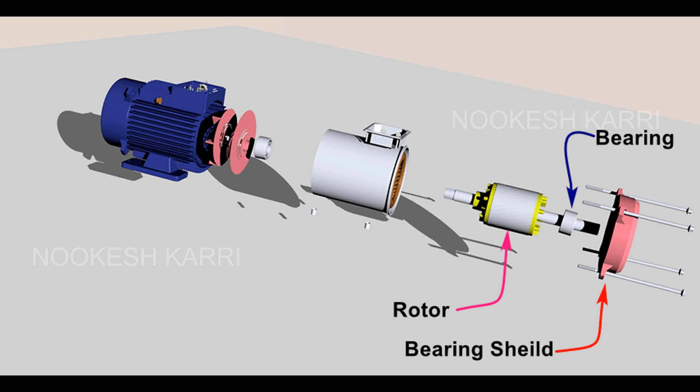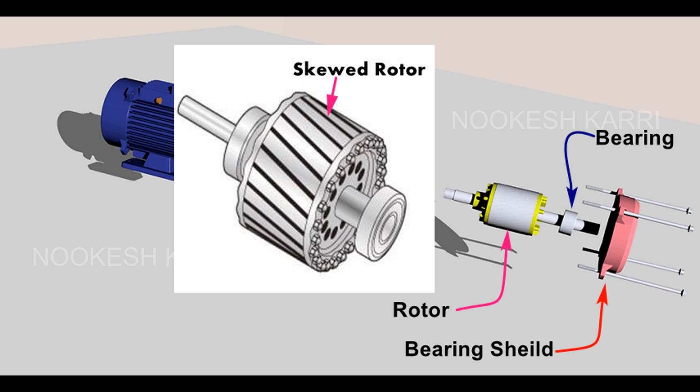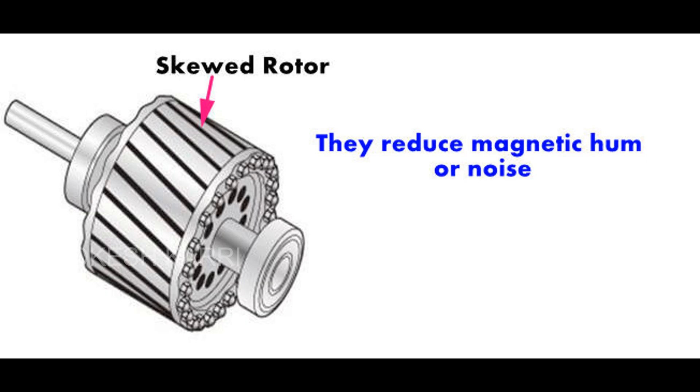An induction motor's rotor can be either wound type or squirrel cage type. In this video, I am explaining the squirrel cage type rotor. The rotor slots are not exactly made parallel to the axis of the shaft, but are slotted a little skewed for the following reasons: they reduce magnetic hummer noise and prevent magnetic locking.